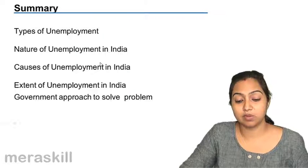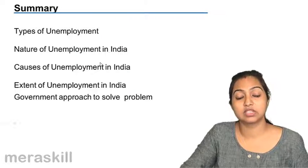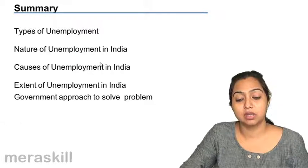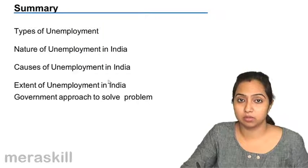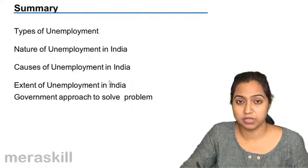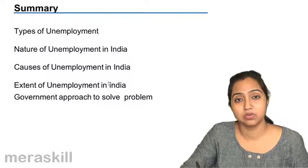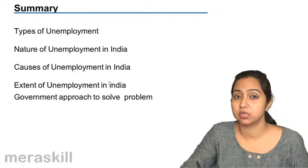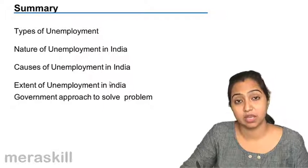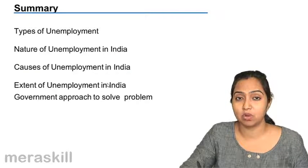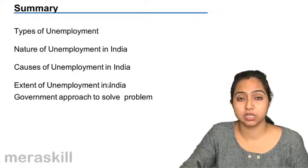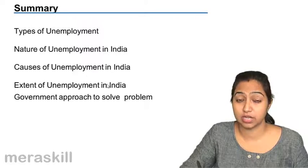With this we come to the end of the quiz. In this chapter we have studied about what unemployment is. When a person who is able and willing to work is not getting a job, he is said to be unemployed. The types of unemployment are: voluntary, structural, technological, casual, seasonal, and disguised.